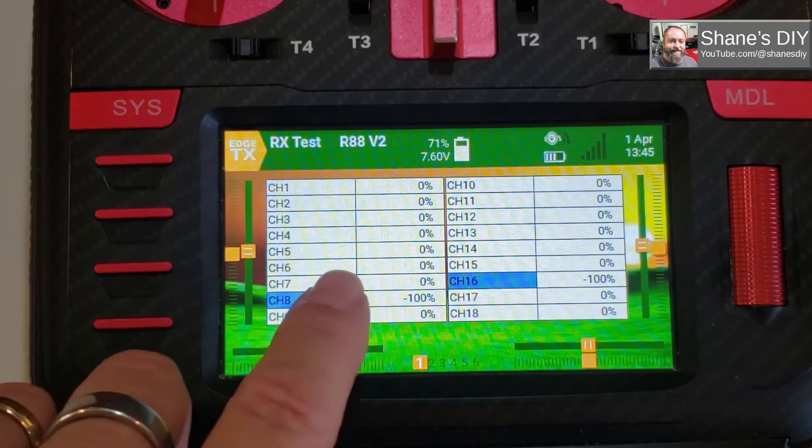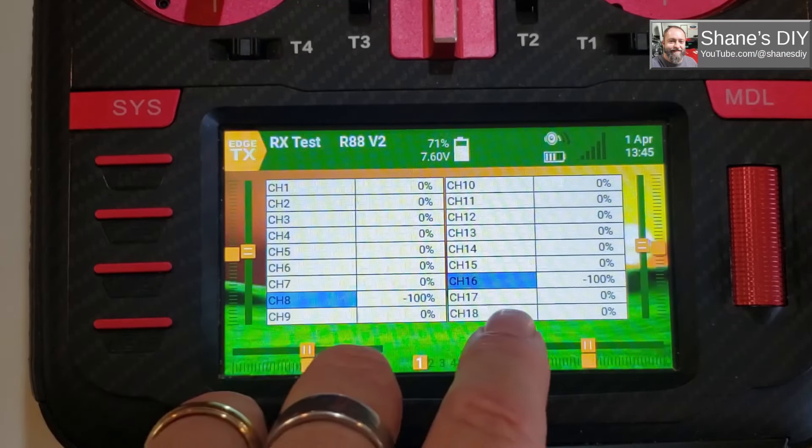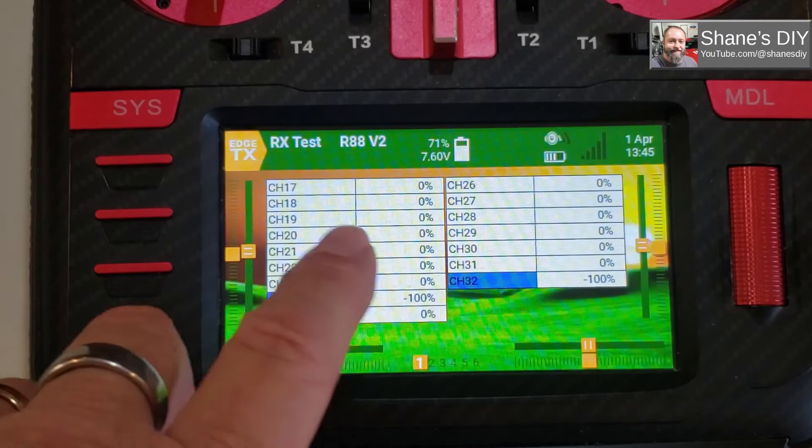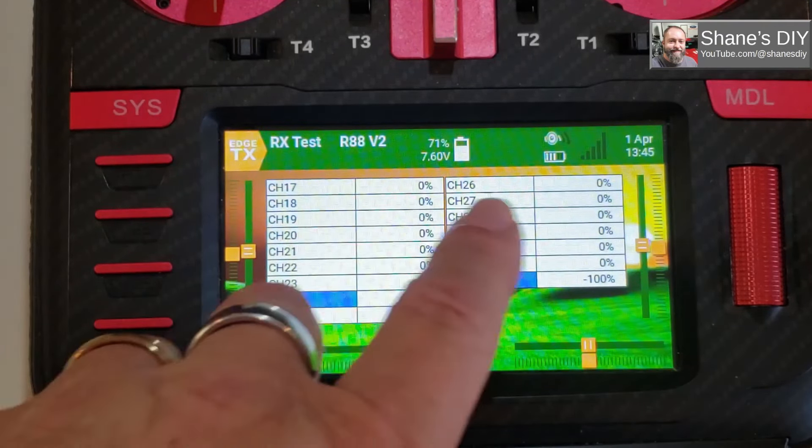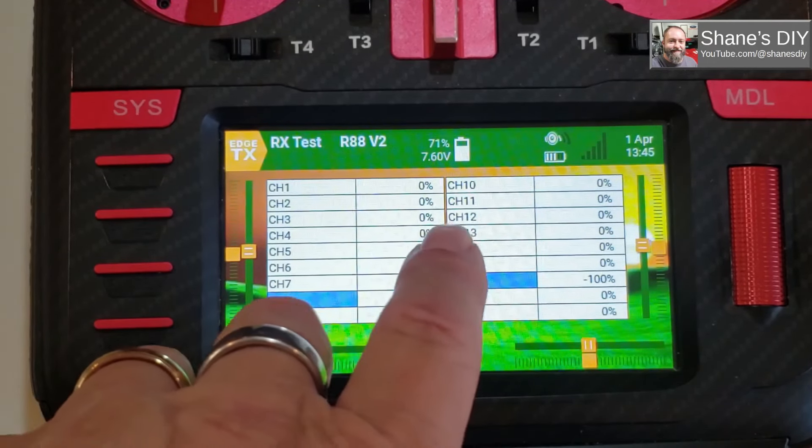I've got the channels shown here on the channel monitor in two screens. First page here shows through 18 channels. If I go to the next page, I've got 17 through 32 just to show both modules. These are on the external module, and up through 16 these are on the internal module.